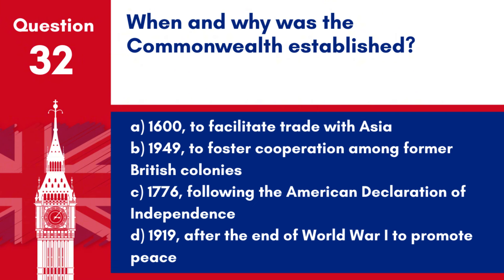Question 32. When and why was the Commonwealth established? a. 1600, to facilitate trade with Asia. b. 1949, to foster cooperation among former British colonies. c. 1776, following the American Declaration of Independence. d. 1919, after the end of World War I, to promote peace.